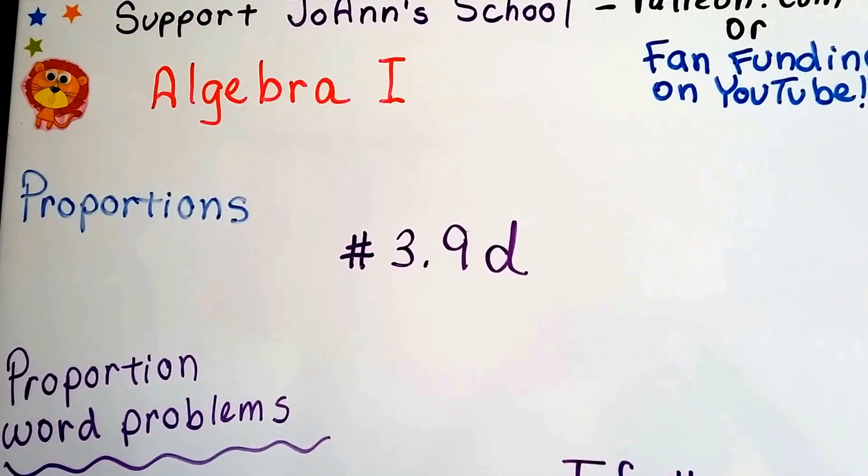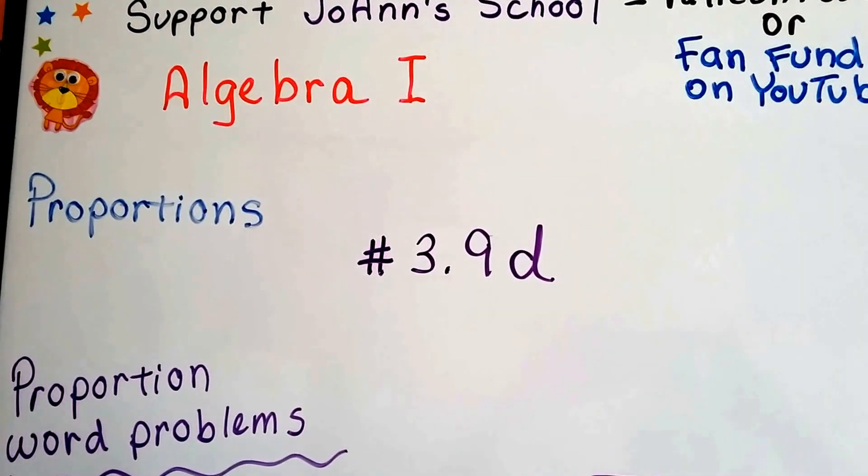Algebra 1, number 3.9d. We're talking about proportions and proportion word problems.